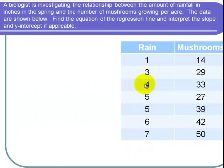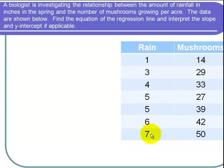Here are our data. We have the amount of rain in inches: 1, 3, all the way down to 7. And the number of mushrooms that grew: 14, 29, all the way to 50.